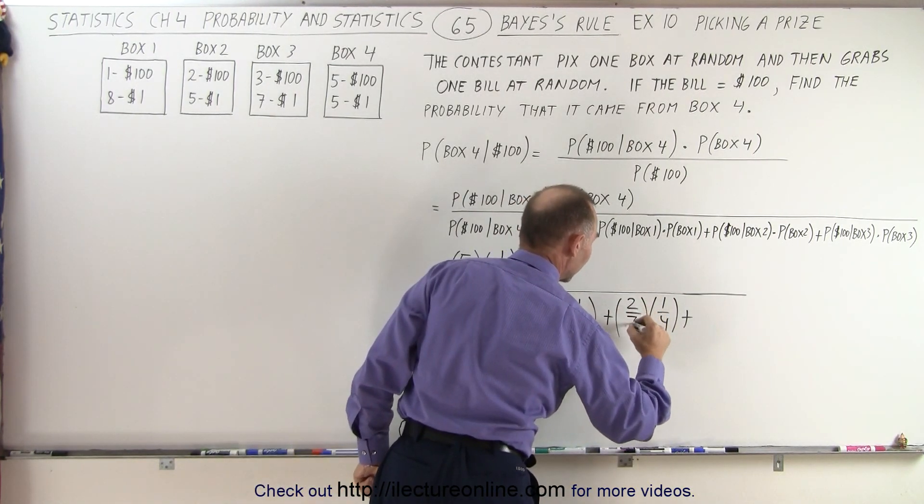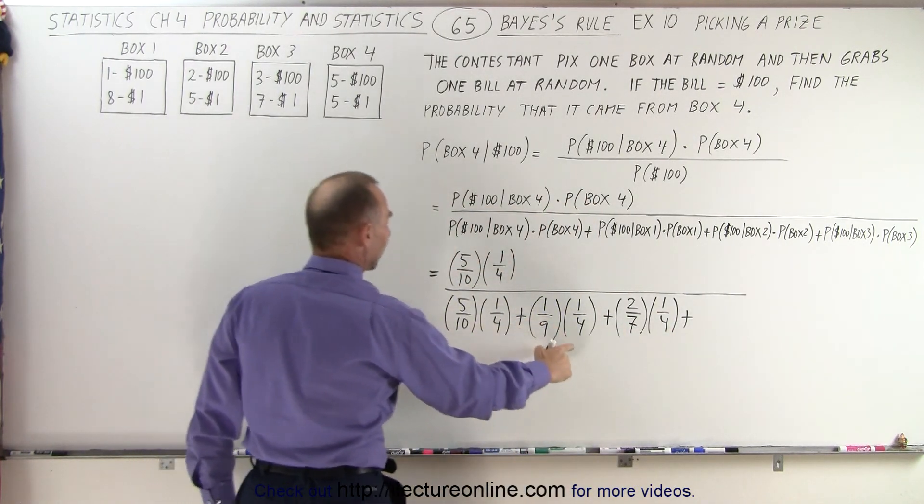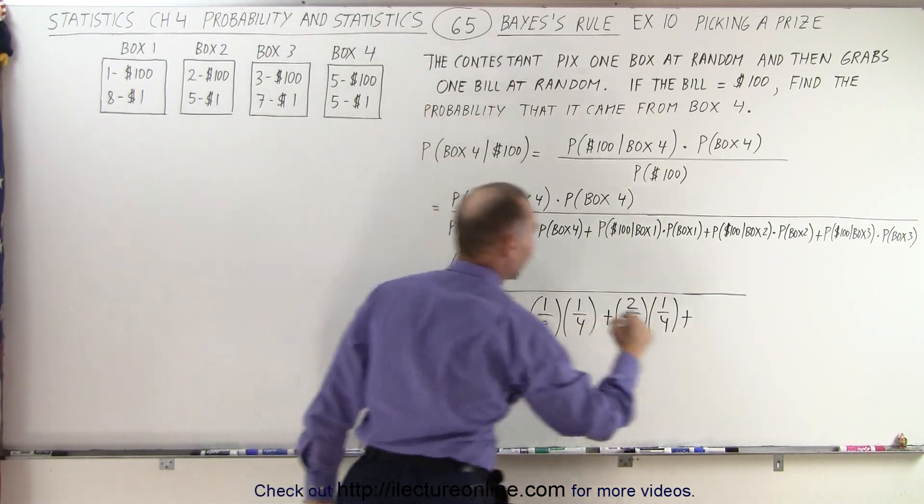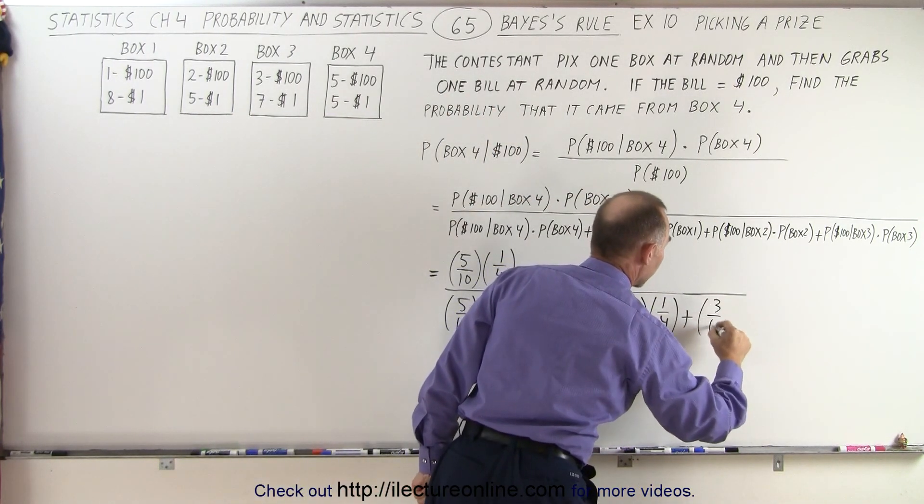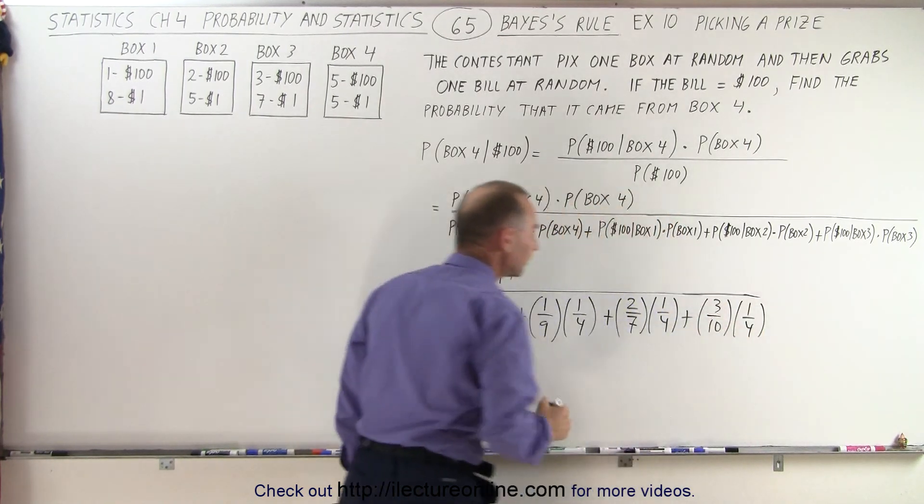So this is box four. That's box one. This is box two. And then for box three, it would be three out of ten times one-quarter. There we go. Okay.